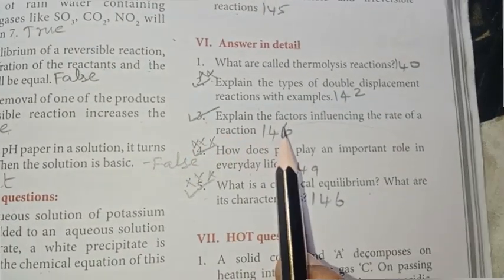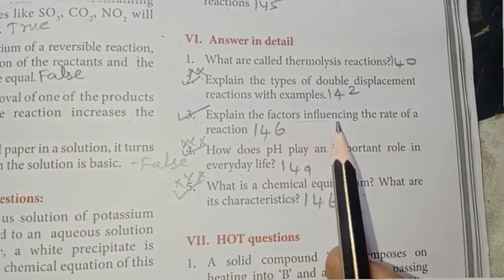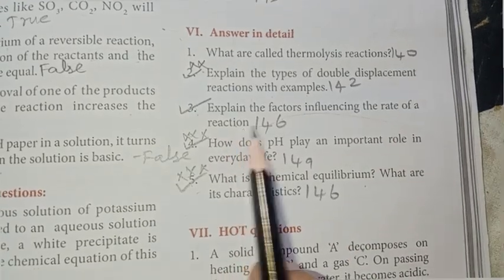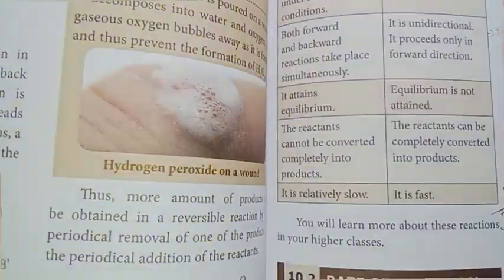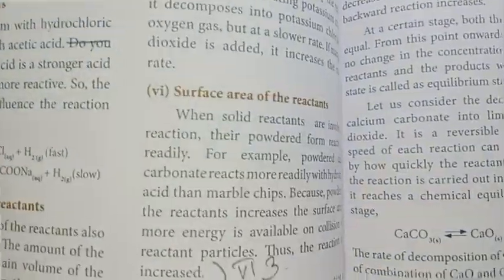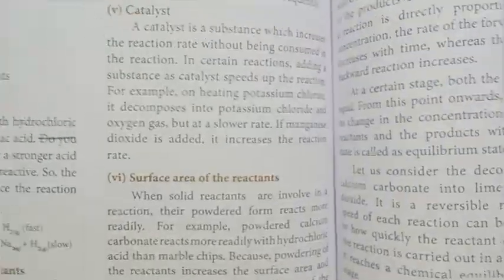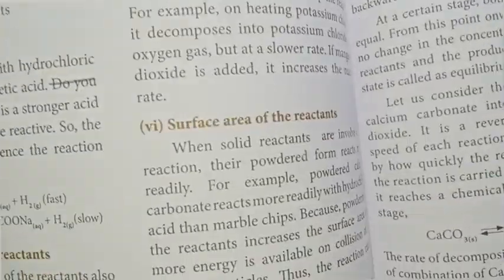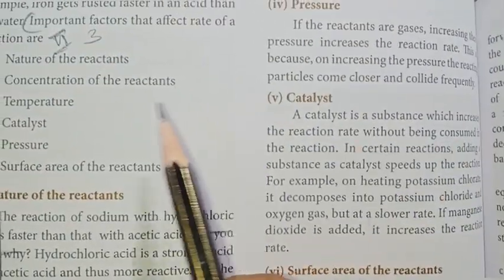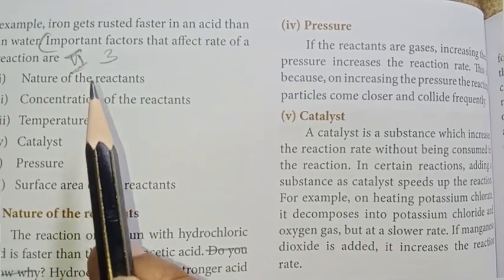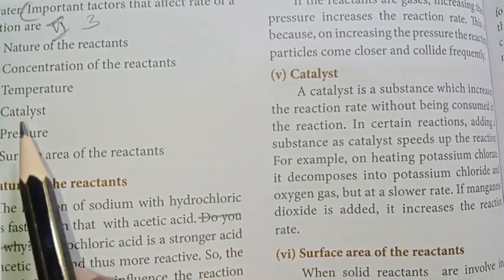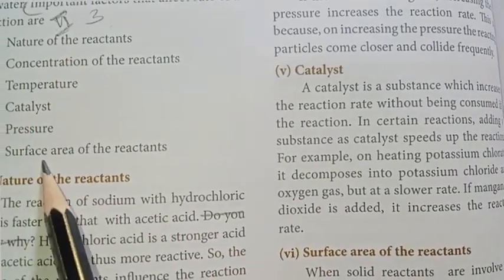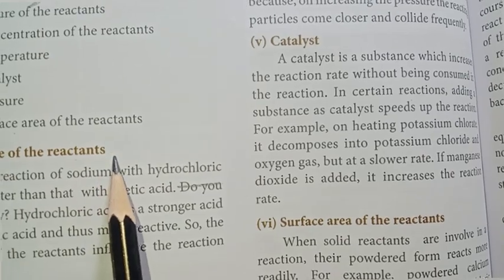Third one: explain the factors influencing the rate of a reaction. Page number 146. The factors influencing the rate of a reaction are: the nature of the reactant, the concentration of the reactants, temperature, pressure, catalyst, and the surface area of the reactants.